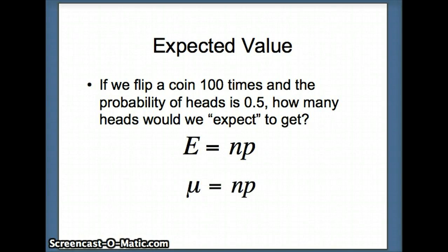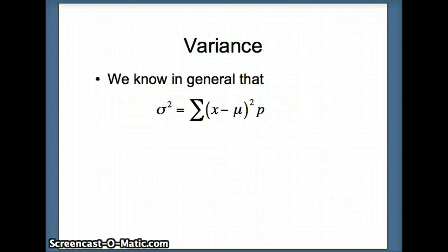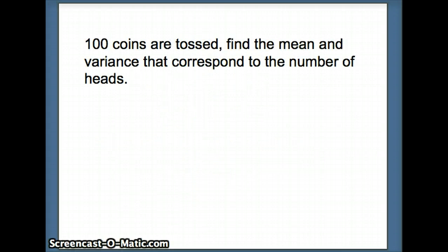That's what we would expect to get, and of course that's equivalent to our notion of the mean of the random variable, mu is np. There's our formula for variance in general. And here's our formula for variance for a binomial random variable, much simpler to compute using npq. So if we have 100 coins tossed, we want to find the mean and the variance that corresponds to the number of heads. So n is 100, p is 0.5. So mu is n times p, 100 times 0.5 is 50. That's what we would expect.